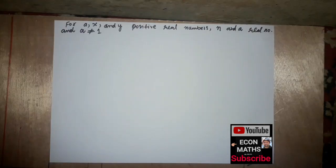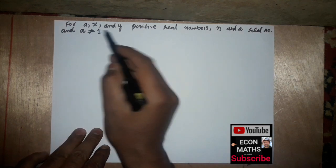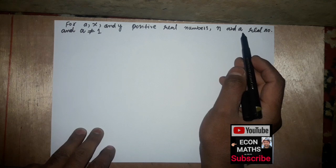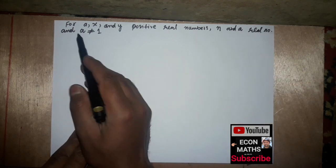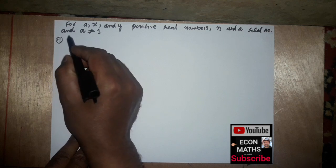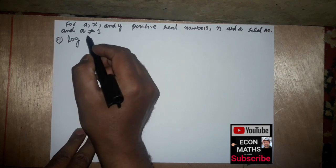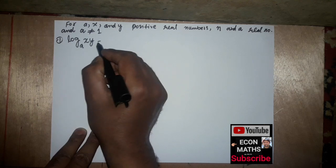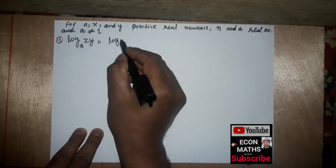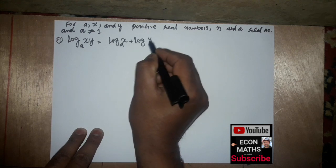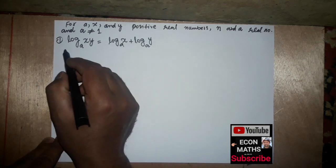Now we will see the properties of logarithms. For a, x, and y positive real numbers, n a real number, and a greater than 1, the first property is: log of x·y to the base a equals log of x to the base a plus log of y to the base a.